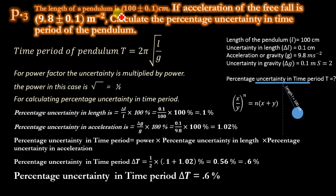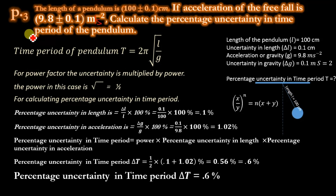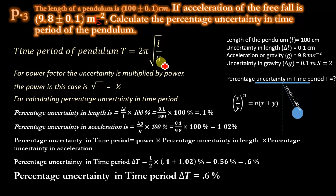The length of a pendulum is 100 ± 0.1 cm. If the acceleration of free fall is 9.8 ± 0.1 m/s², calculate the percentage uncertainty and time period of the pendulum. The time period of a pendulum is T = 2π√(L/g), where L is the length of the pendulum and g is the gravitational acceleration.